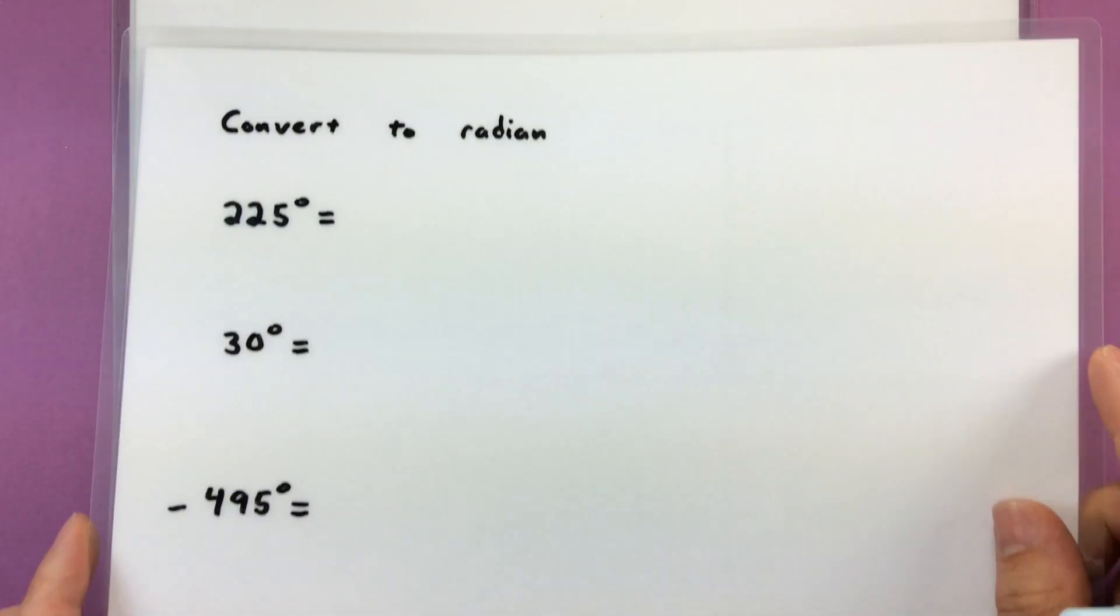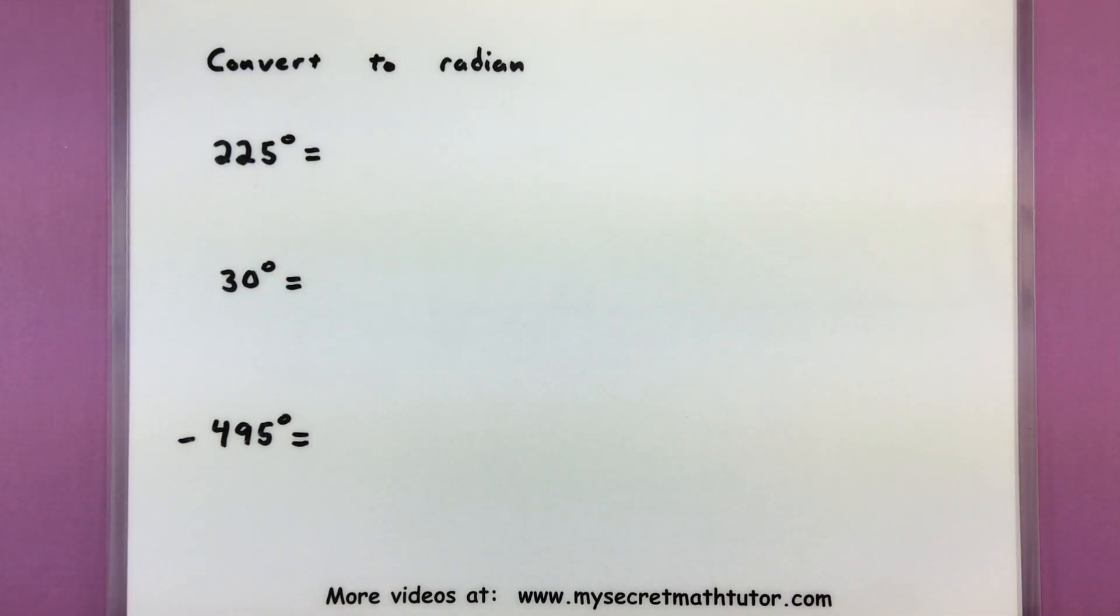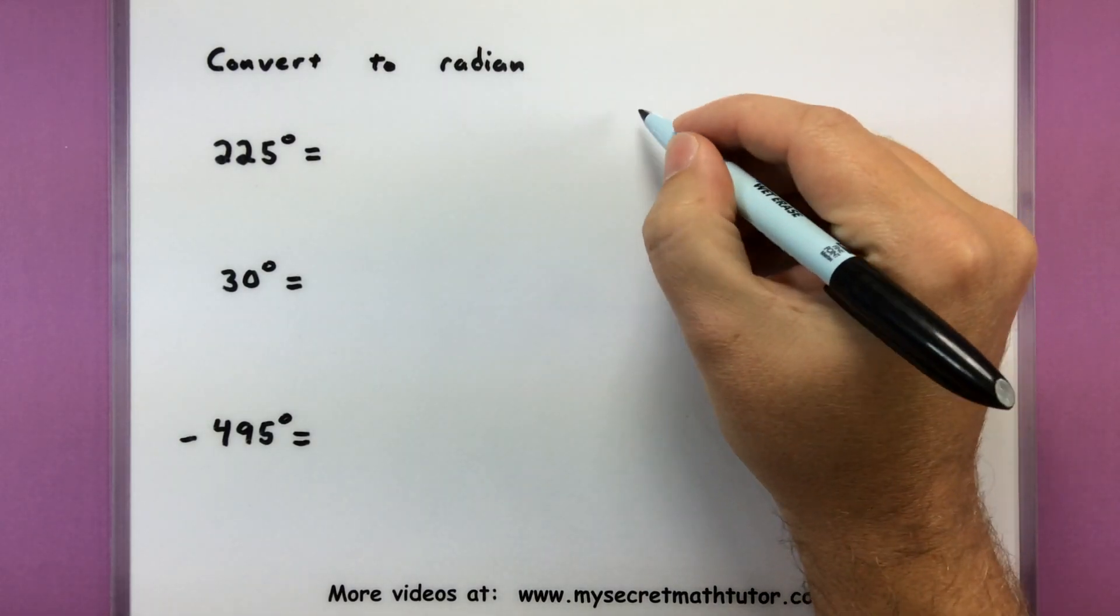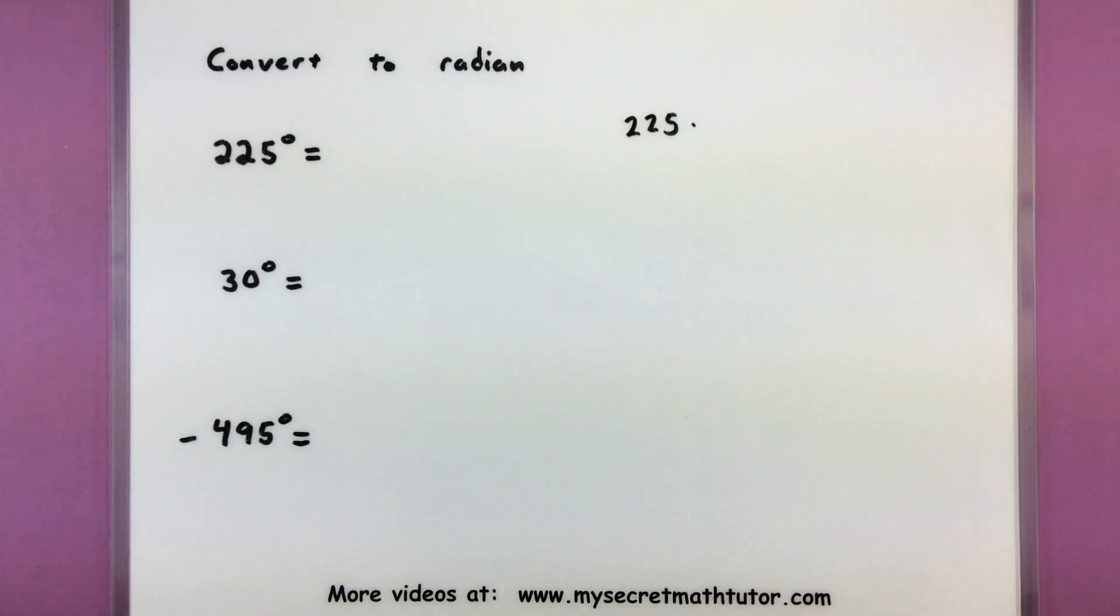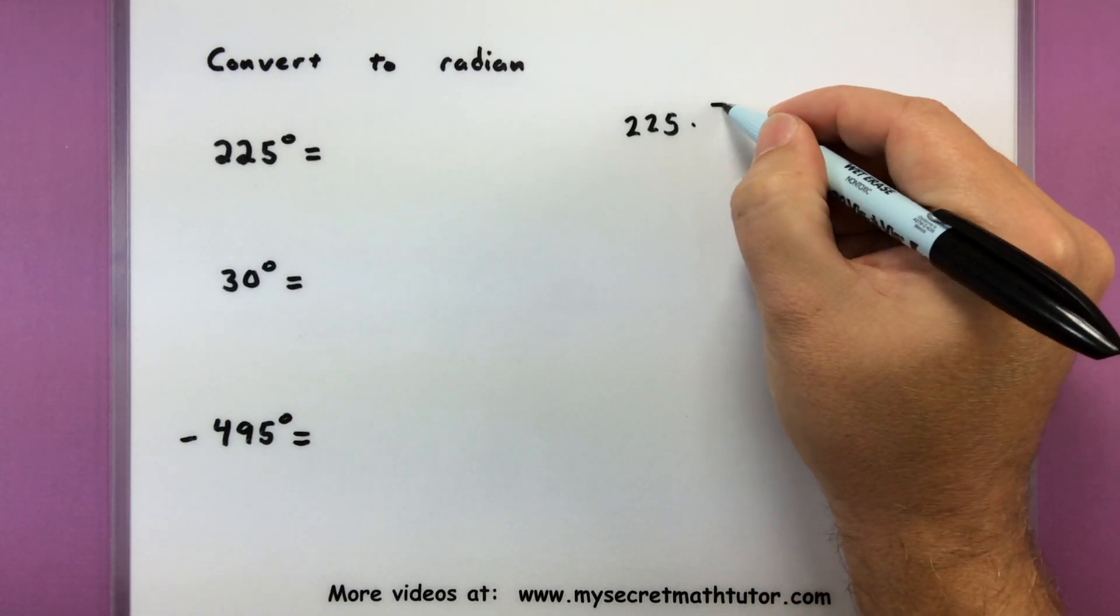So let's go ahead and grab some examples and see how this works out. So all of these happen to be in degrees and we really want them into radian measure. So imagine starting off with your degrees and then multiplying by pi divided by 180.